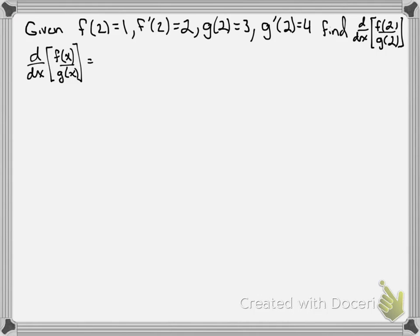We know from our derivative rules that this is g of x times f prime of x minus f of x times g prime of x all over g of x squared.